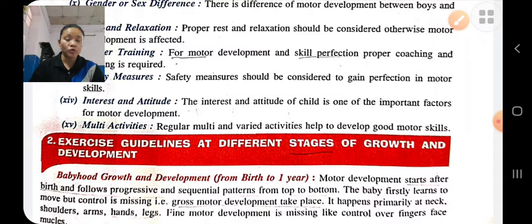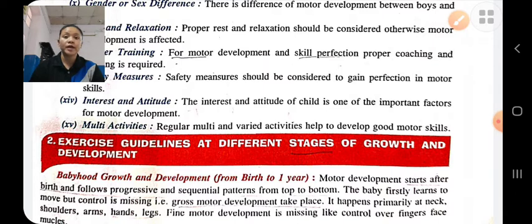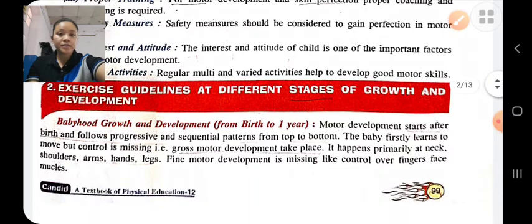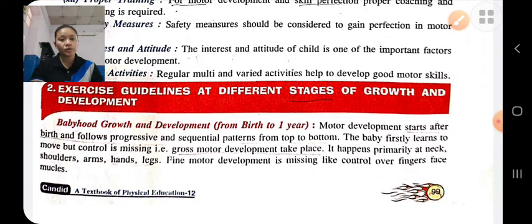Growth is a quantitative change in the child. Development is a qualitative change; it cannot be measured, like development of the child's brain, development of child bones, etc. The first stage is babyhood, from birth to one year.